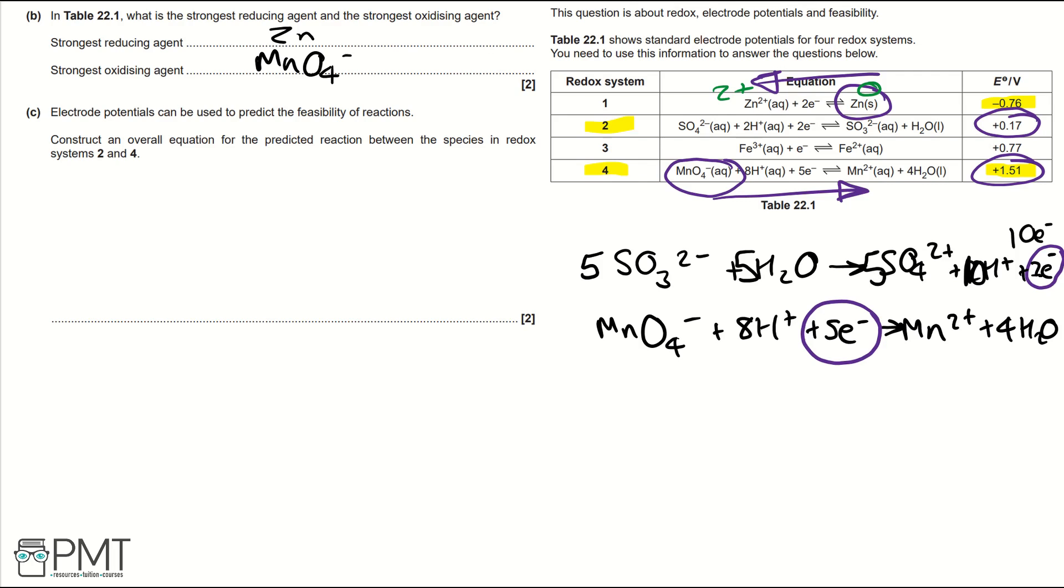And for redox system 4, we need to multiply it by 2. So 2, then 16, then 10 electrons and then 2 Mn2+ and 8H2O.